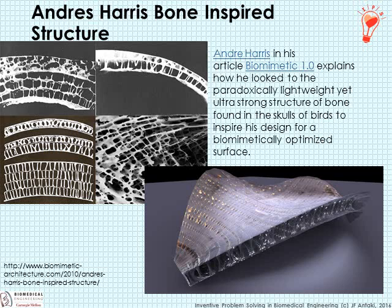I'd like to share a few more examples. This one is from Andres Harris, a designer and architect. He wrote an article, 'The Biomimetic 1.0,' explaining how he looked at the paradoxically lightweight yet ultra-strong structure of bone found in the skulls of birds to inspire his design for a biomimetically optimized surface. Birds' skulls need to be hard but very, very light — hence a contradiction. It's solved by a trabecularized structure that's mostly full of air but masterfully configured to provide strength exactly where it's needed. Andres used this in designing shells and domes for various architectural structures.